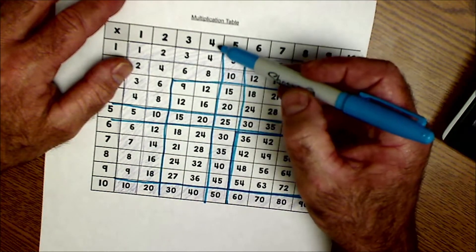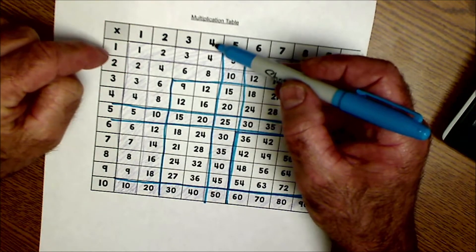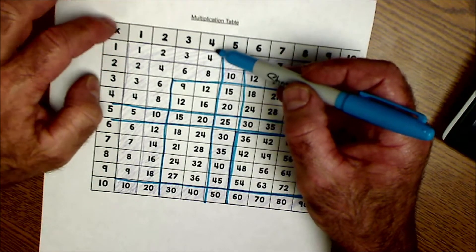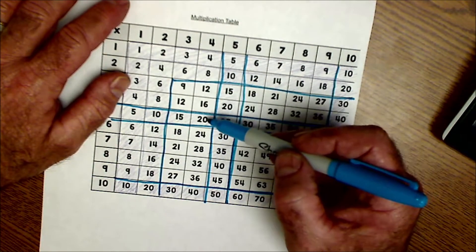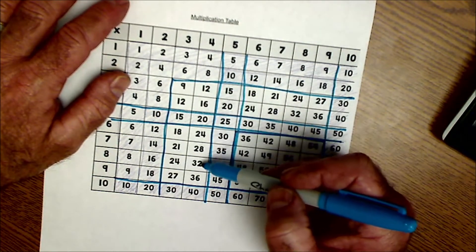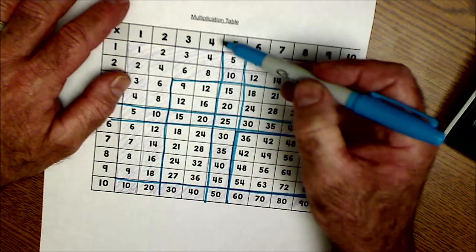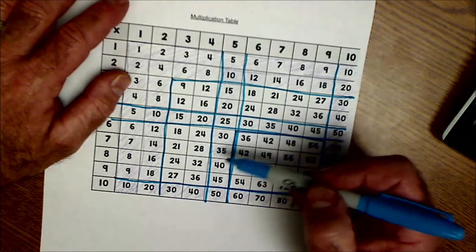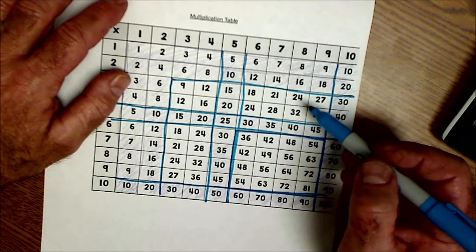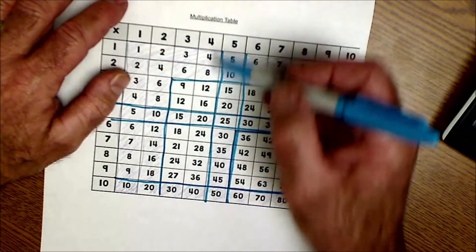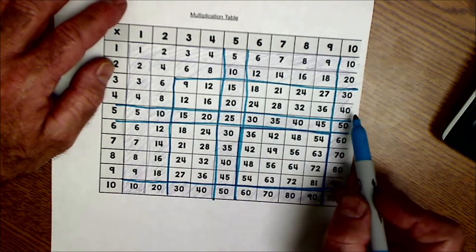Then same thing with 4's. 4's aren't too bad either because you could add 4 in your head pretty quick. So just count by 4's: 4, 8, 12, 16, 20, 24, 28, 32, 36, 40. Just keep counting by 3's and by 4's every day until you have all those memorized. 3's and 4's this way are going to be the same as 3's and 4's that way.